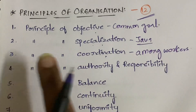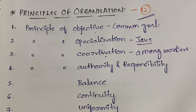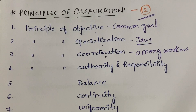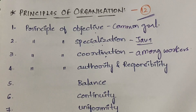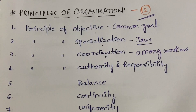The fourth is the principle of authority and responsibility. Every person has authority to do their work. If they are unable to work — for instance, going on leave or feeling unwell — they can hand over that responsibility to another person. However, if that other person fails to do the work, both the person who handed over and the person who took over are accountable.